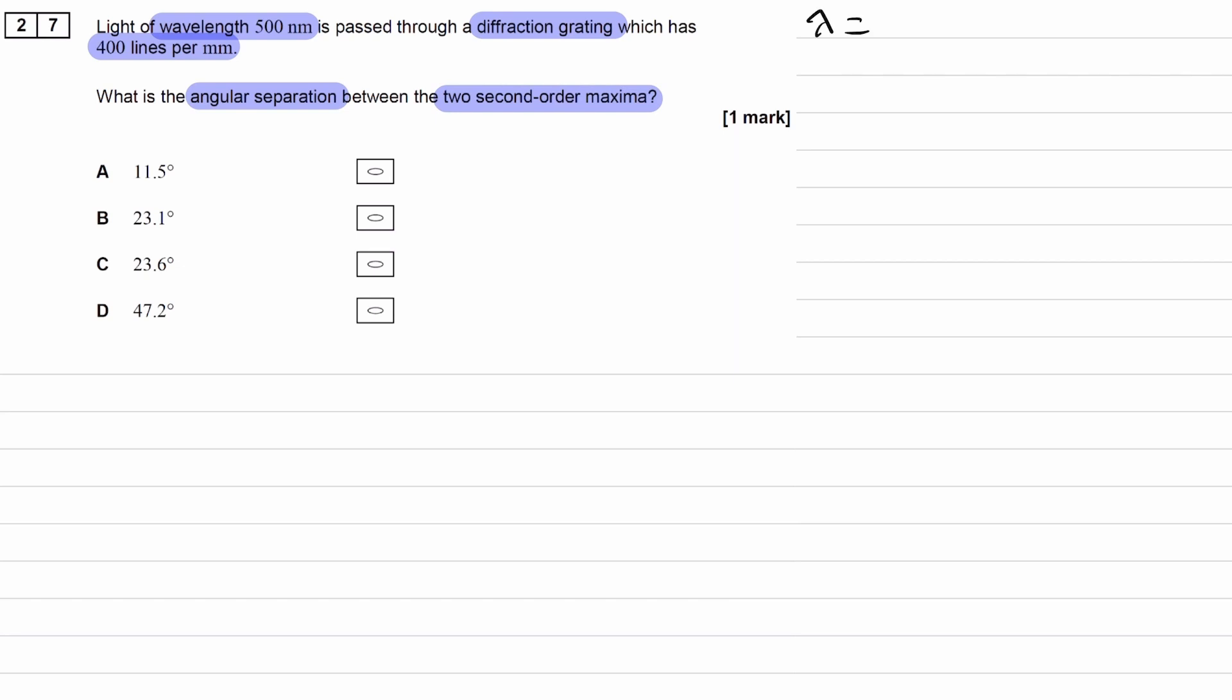We have wavelength 500 times 10 to the minus 9 meters. We have a diffraction grating, so we're going to be using the equation n lambda equals d sine theta.